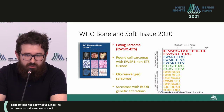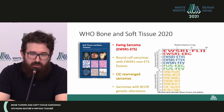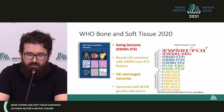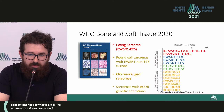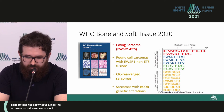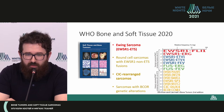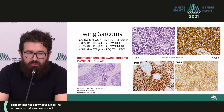Ewing sarcomas are the most frequent type of tumor in this group. They are characterized by genetic rearrangement in EWSR1 with different fusion partners. The most frequent, approximately 90%, is rearrangement in EWSR1-FLI1, and the next one is EWSR1-ERG. There is also a separate group of round cell sarcomas which have rearrangements in CIC and BCOR genes.